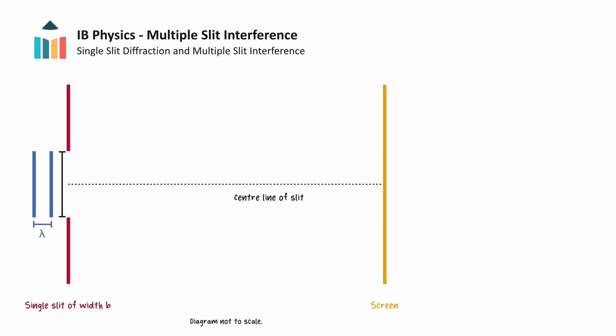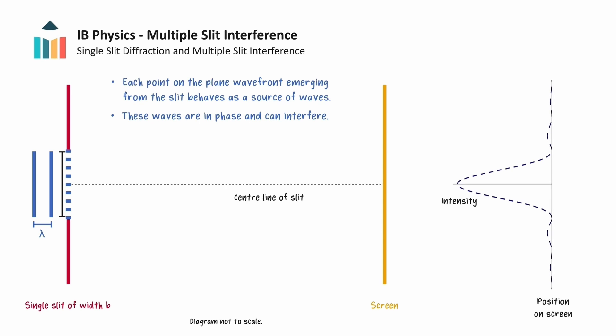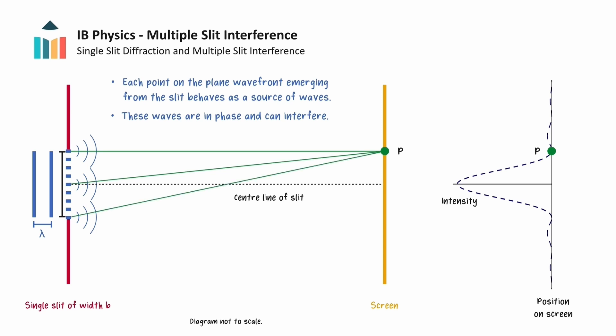We will now discuss the formation of the diffraction pattern from a single rectangular slit in more detail. When a wavefront emerges from a single slit, we can imagine dividing the slit into several narrow strips of equal width. Each strip then acts as a source of waves. These point sources are all on the same wavefront, so they are in phase or coherent, and therefore these waves can interfere. We then find that the intensity of light observed on the screen resembles the following graph. Each of the point sources will have a different path length to point P, and it is these path length differences that result in destructive interference at point P.